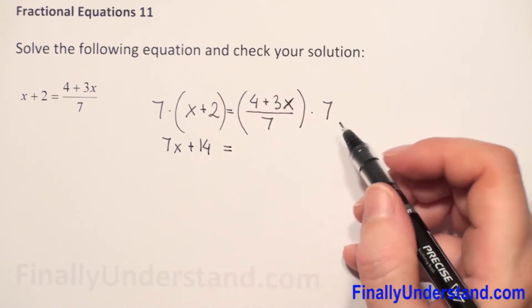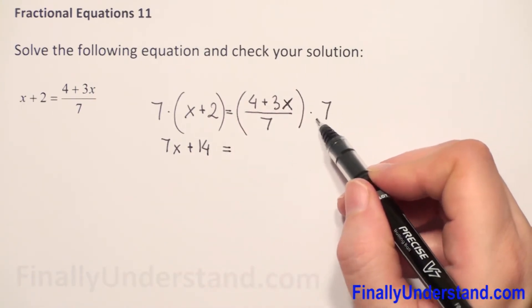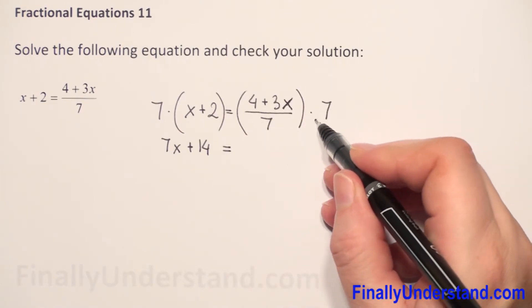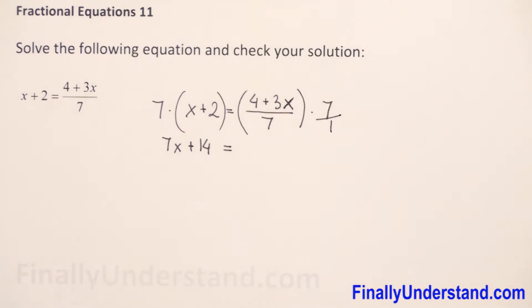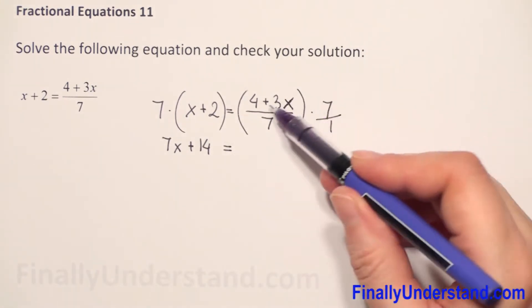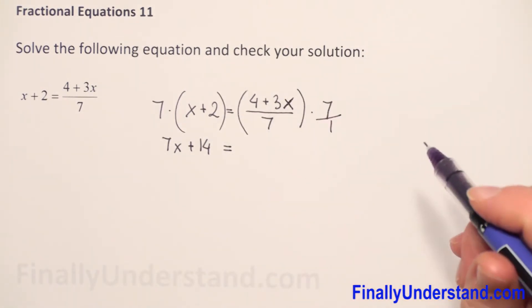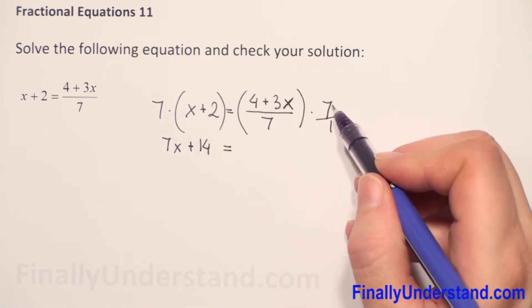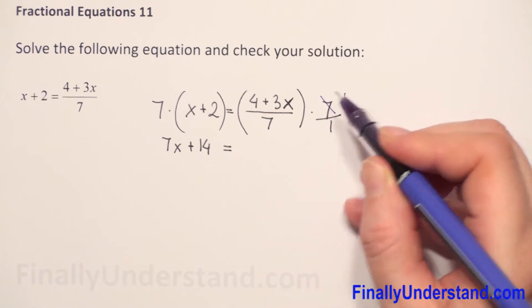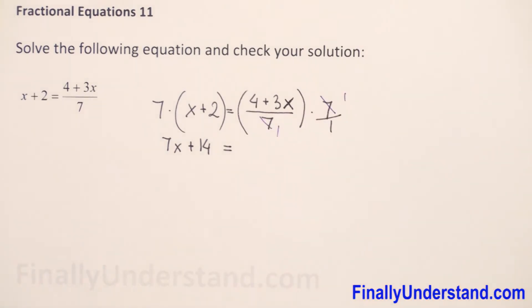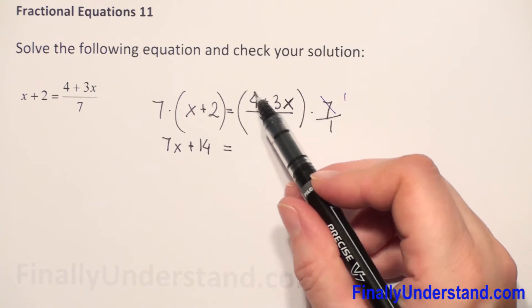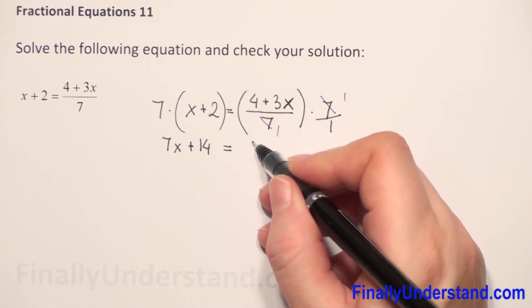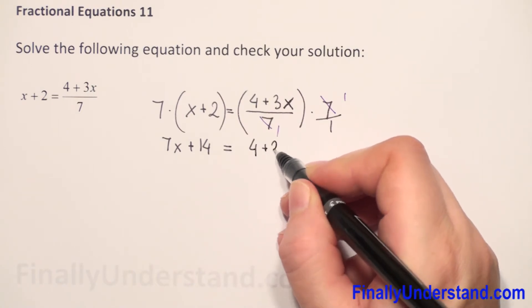On the right side we have a fraction, so we can change 7 to a fraction also — it will be 7 over 1. Now we see we have multiplication of two fractions. We always check if we can reduce something first. We have 7 in the numerator and 7 in the denominator, so we can cancel out the 7. So we have the whole expression times 1 over 1, which is still the same expression: 4 plus 3x.